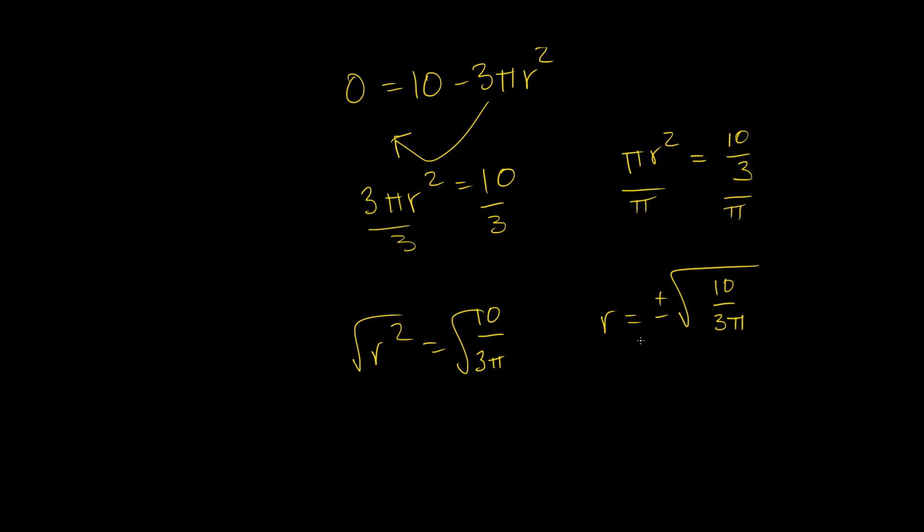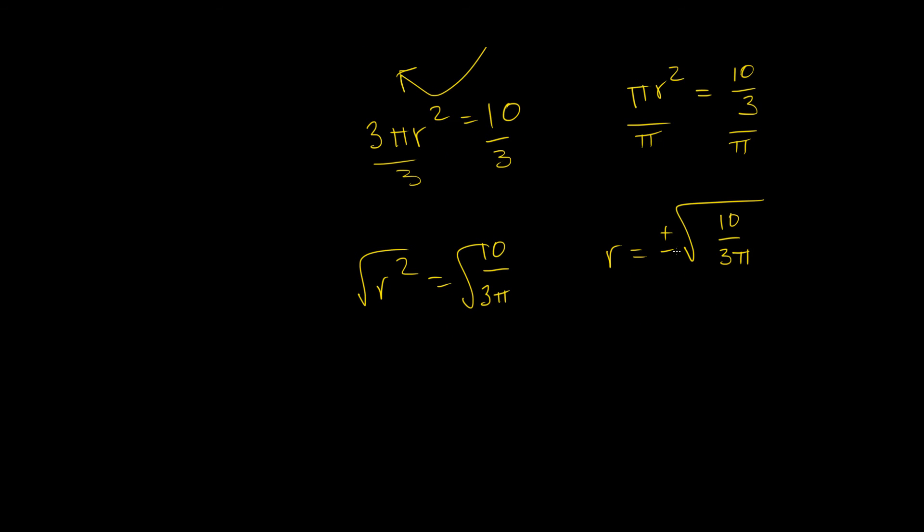Now, let's think about this logically. Can I really have a negative radius? Well, no, because I can't say my cylinder has a radius of negative 3 feet. That just doesn't make sense. So actually, this negative isn't part of the real answer. So we get a radius that is equal to the square root of 10 over 3 pi. And this comes out to be something like 1.03.